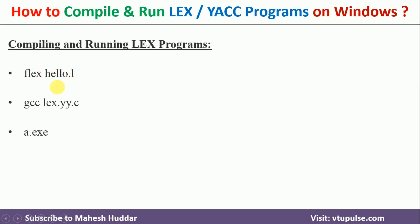Let us assume that the name of the program is hello.l. You need to use the flex command to convert this particular hello.l into a C file — that is: flex hello.l. It will create a default C file whose name is lex.yy.c. You can compile this lex.yy.c with the help of the GCC command and you will get an executable file a.exe. You can run that. This is how you compile and run a Lex program.